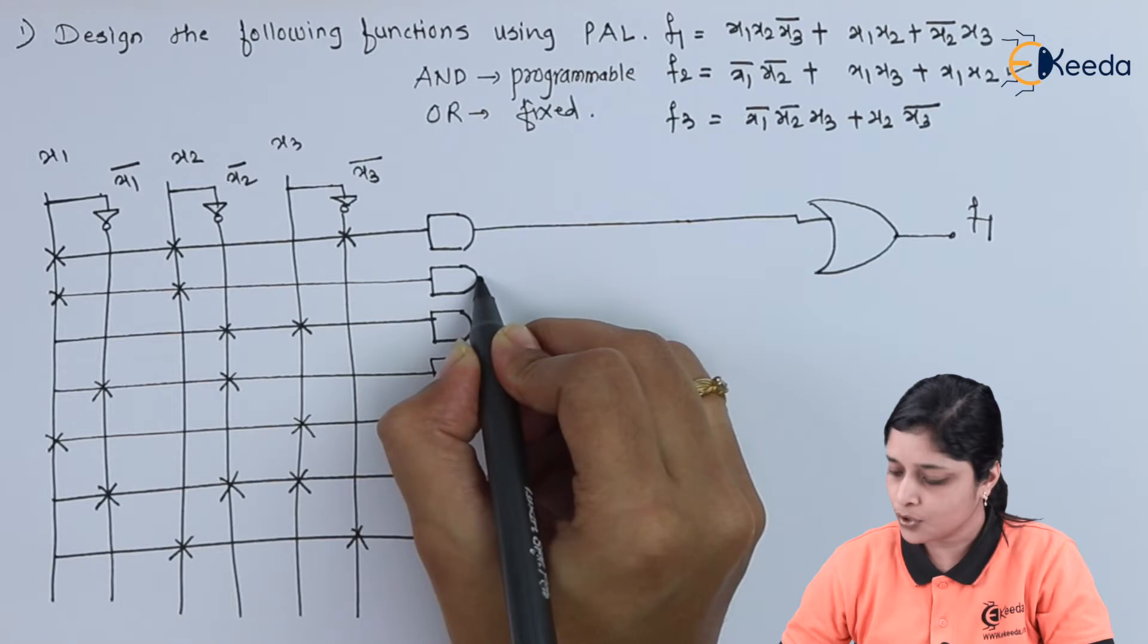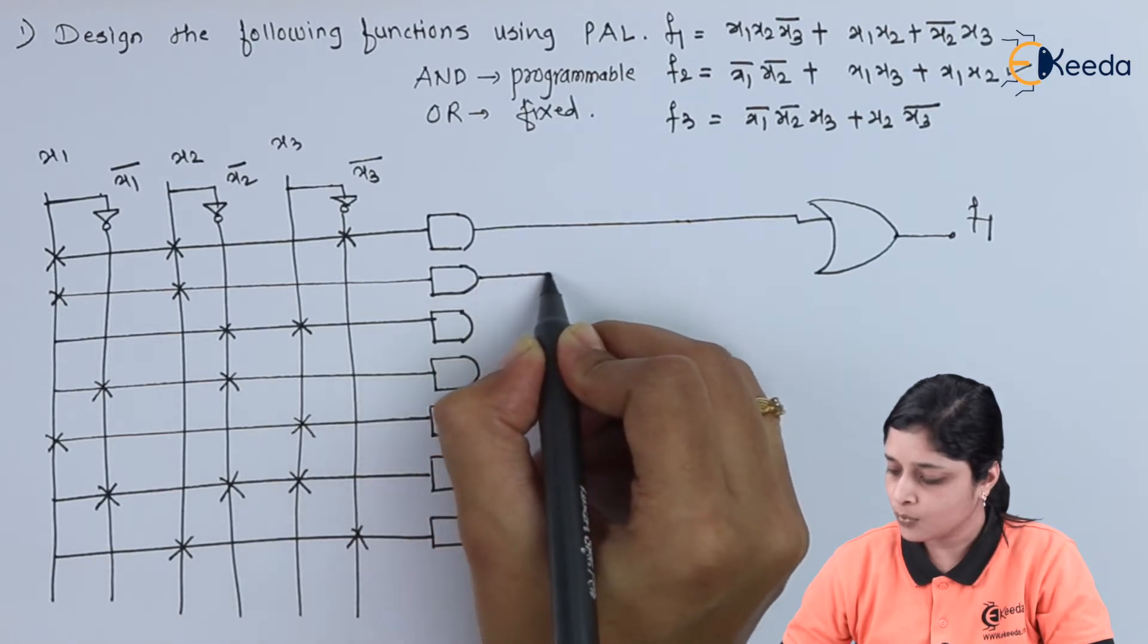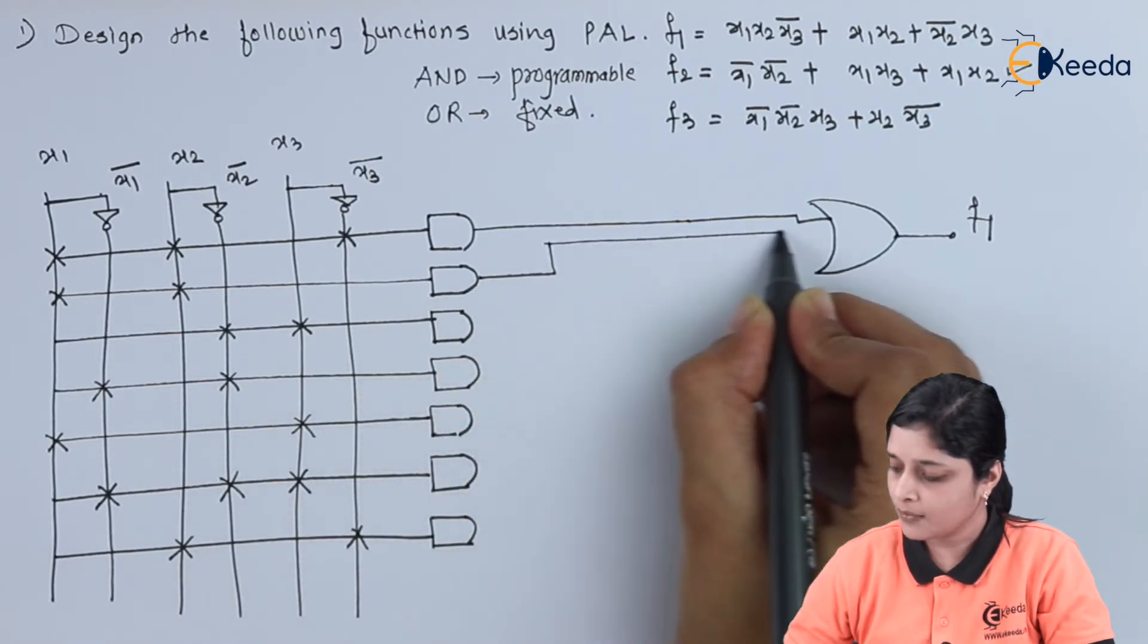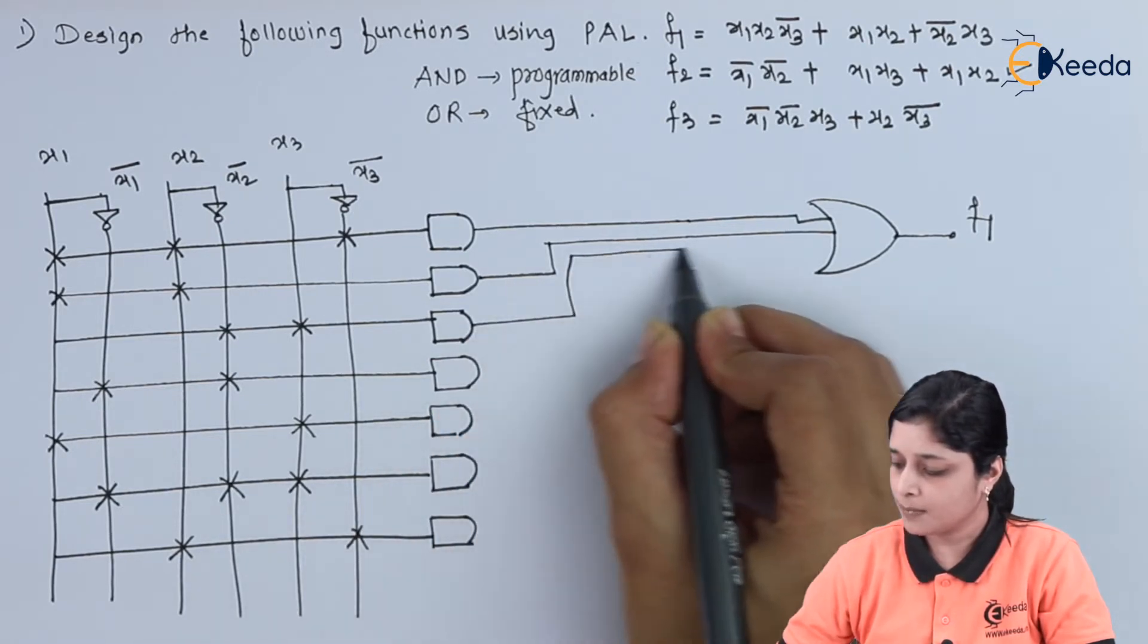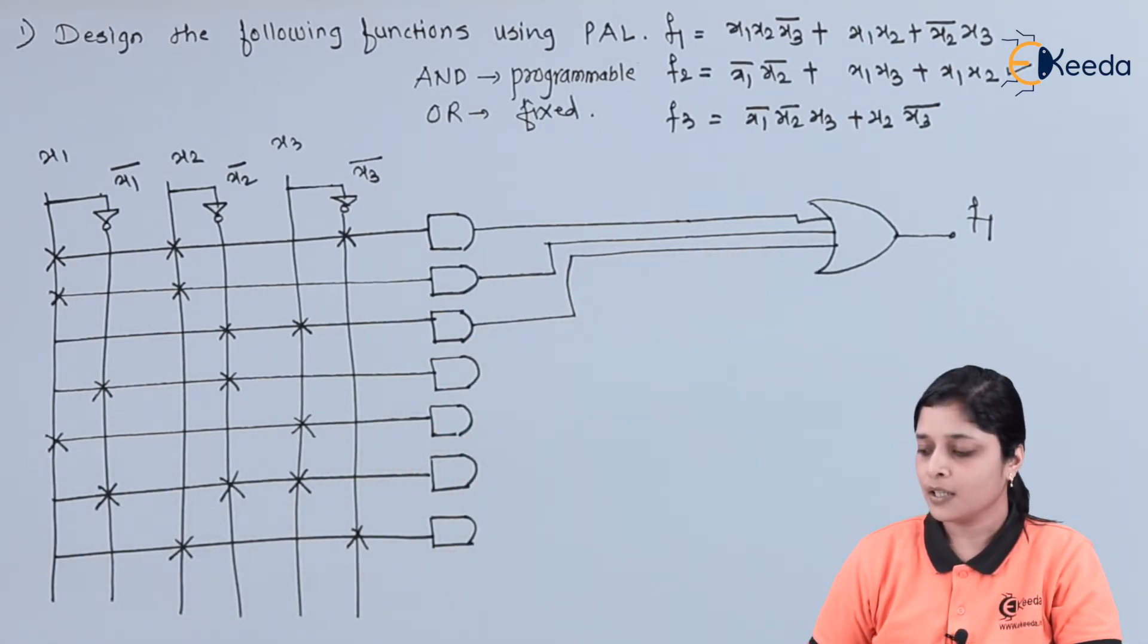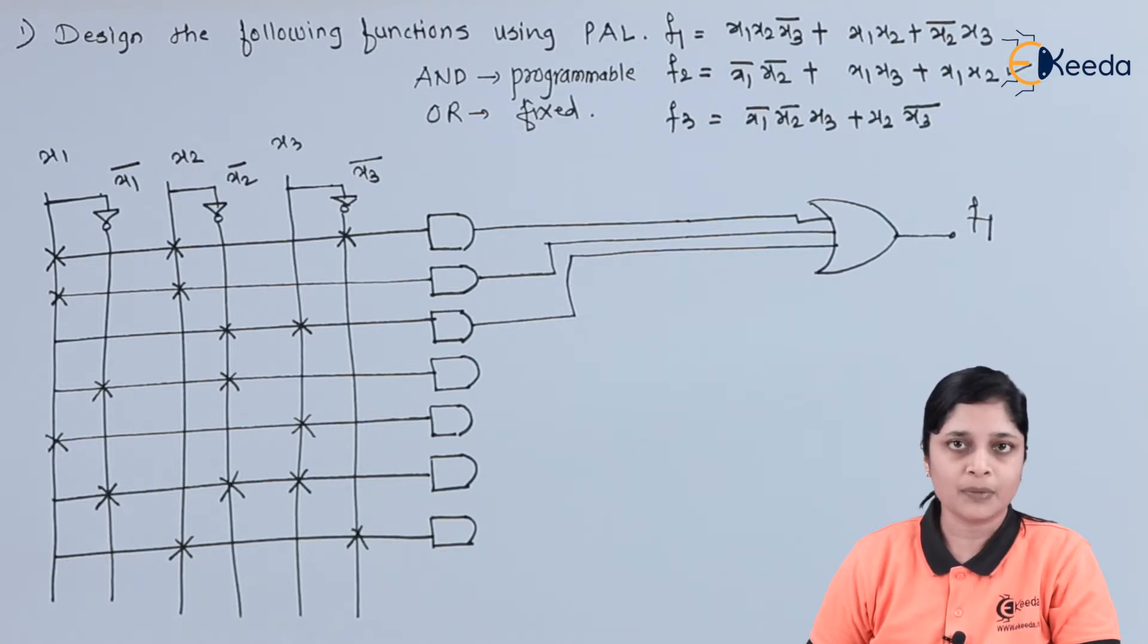Then this gives you x1 x2. So this term I will apply here and the last term I will apply here. In this way, the F1 is implemented with the structure fixed OR gate.